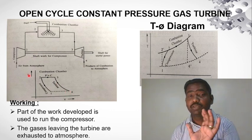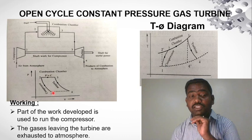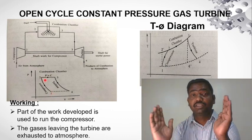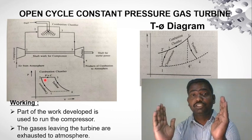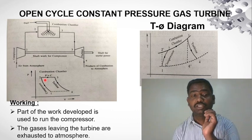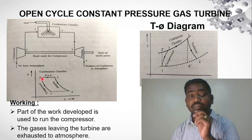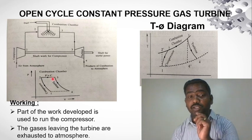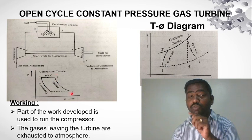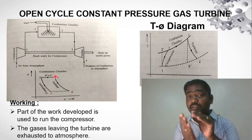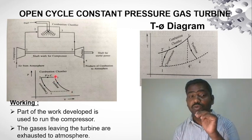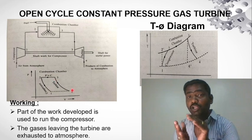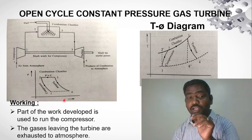Looking at the volume changes: from 1 to 2, the volume decreases as air is compressed. From 2 to 3, the volume expands at constant pressure during combustion. From 3 to 4, the volume further expands as gases pass through the turbine.